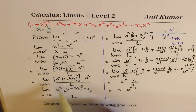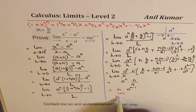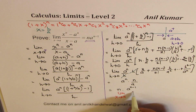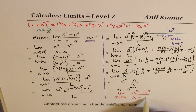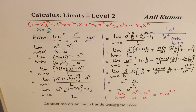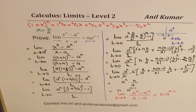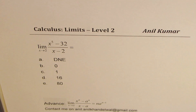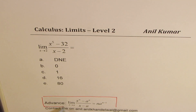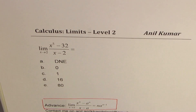We have now completed the proof of this statement. The formula is: limit x approaches a for x to the power of n minus a to the power of n over x minus a equals n times a to the power of n minus 1. We are going to use this formula from now onwards to solve many difficult multiple choice questions. Please take your time to answer these multiple choice questions and then look into my suggestions.